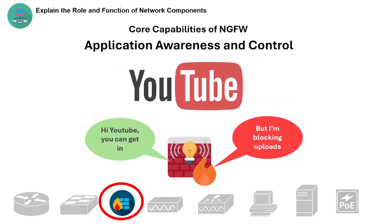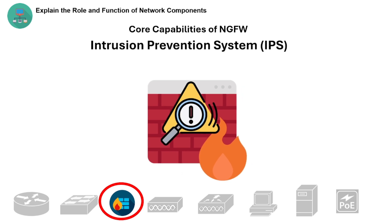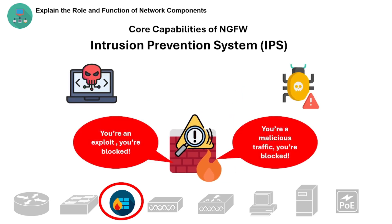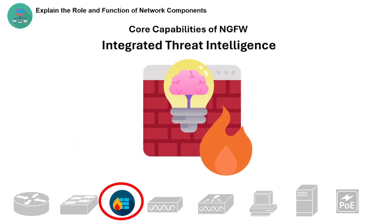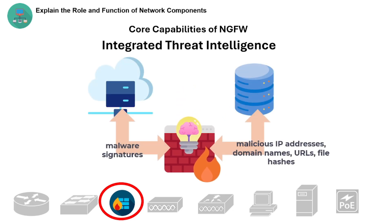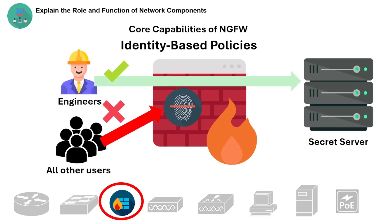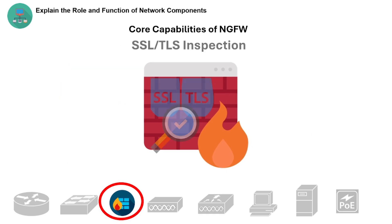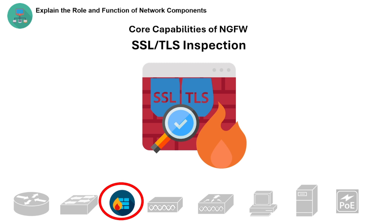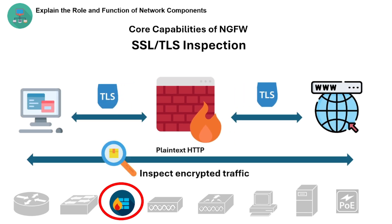It can allow or block specific app features — for example, allow YouTube but block uploads. It also includes Intrusion Prevention System (IPS), which detects and blocks known exploits and malicious traffic; Integrated Threat Intelligence, which uses cloud-based services or databases to stay updated with real-time threat feeds; identity-based policies, where policies are enforced based on users, roles, or groups rather than just IP addresses; and SSL/TLS inspection, which can decrypt and inspect encrypted traffic for hidden threats.